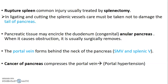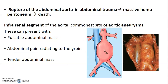During splenectomy for traumatic rupture you must be very careful while ligating splenic vessels not to damage the tail of the pancreas, which is also found around the hilum of the spleen. Pancreatic tissue surrounding the duodenum may lead to annular pancreas — a congenital anomaly due to the different origins of the pancreas from dorsal and ventral buds which usually fuse. The portal vein forms behind the neck of the pancreas by union of the superior mesenteric vein and splenic vein. In cancers of the pancreas, compression of the portal vein can occur, leading to portal hypertension.